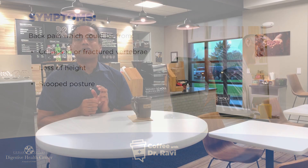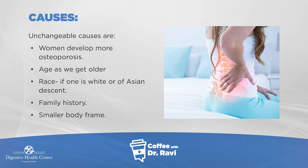The causes of bone thinning can be manyfold. The biggest one is as we age. Also osteoporosis is more common in women, more common in people who are of white or Asian origin, and certain people who have a family history — in other words, if parents have bone thinning we are susceptible to that — and people who have smaller body frames.